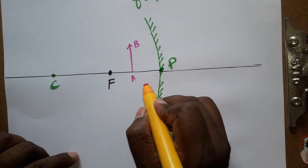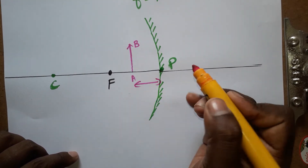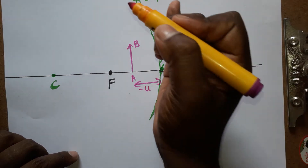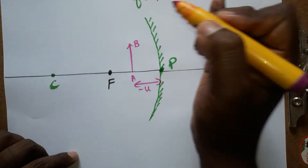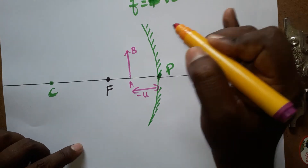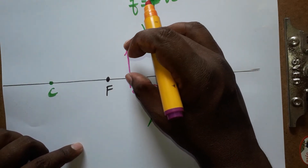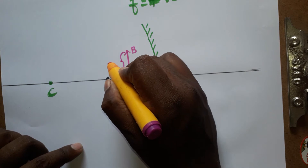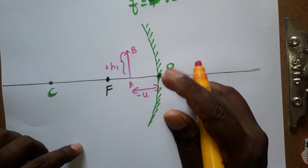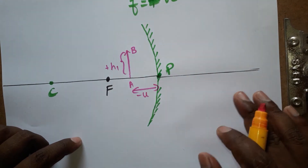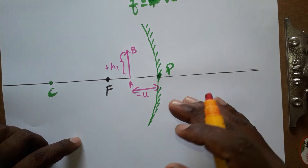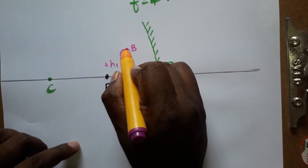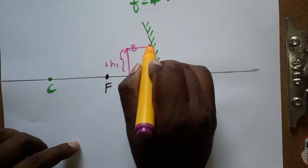Using sign convention: the object distance u is on the left side of the mirror, so u is negative. The right side of the pole center is positive. Object height h1 is positive because it is above the principal axis. Above the principal axis is positive; below is negative.